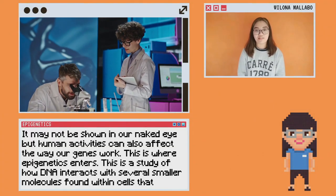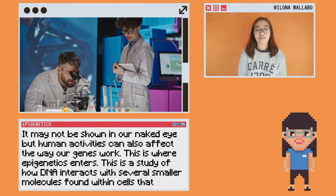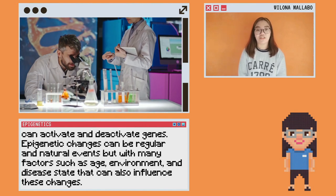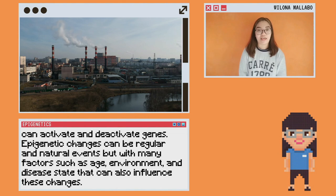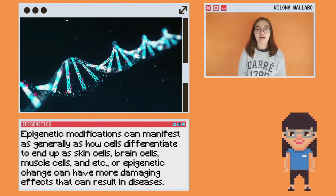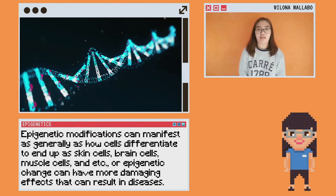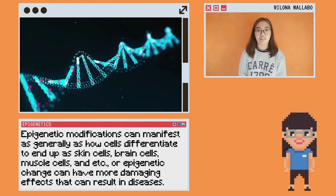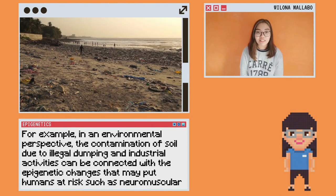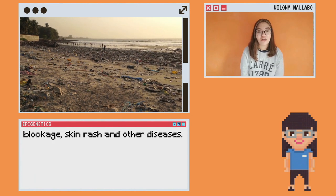It may not be visible to the naked eye, but human activities can also affect the way our genes work. This is where epigenetics enters — the study of how DNA interacts with smaller molecules found within cells that can activate and deactivate genes. Epigenetic changes can be regular and natural events, but factors such as age, environment, and disease state can also influence these changes. Epigenetic modifications can manifest as how cells differentiate into skin cells, brain cells, muscle cells, etc., or as more damaging effects that result in diseases. For example, from an environmental perspective, contamination of soil due to illegal dumping and industrial activities can be connected with epigenetic changes that may put humans at risk, such as neuromuscular blockage, skin rash, and other diseases.